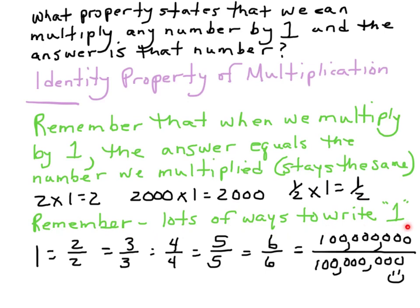Two thousand times one is two thousand. One half times one is one half. Lots of ways to write one — one can be two over two, three over three, four over four, five over five, six over six, a hundred million over a hundred million. It works.